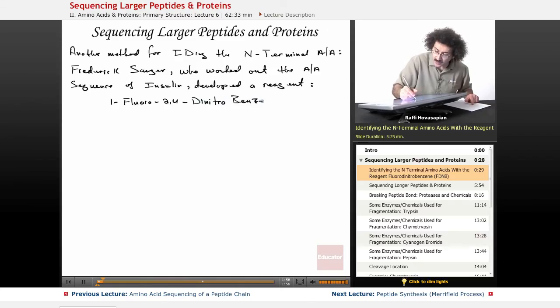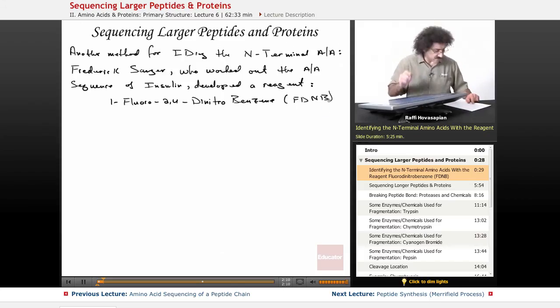I tend to separate the words - you'll see it as one word, dinitrobenzene with a small 'b', but I tend to separate them. It doesn't really matter. We'll just refer to it as FDNB, fluorodinitrobenzene. Here is the procedure.